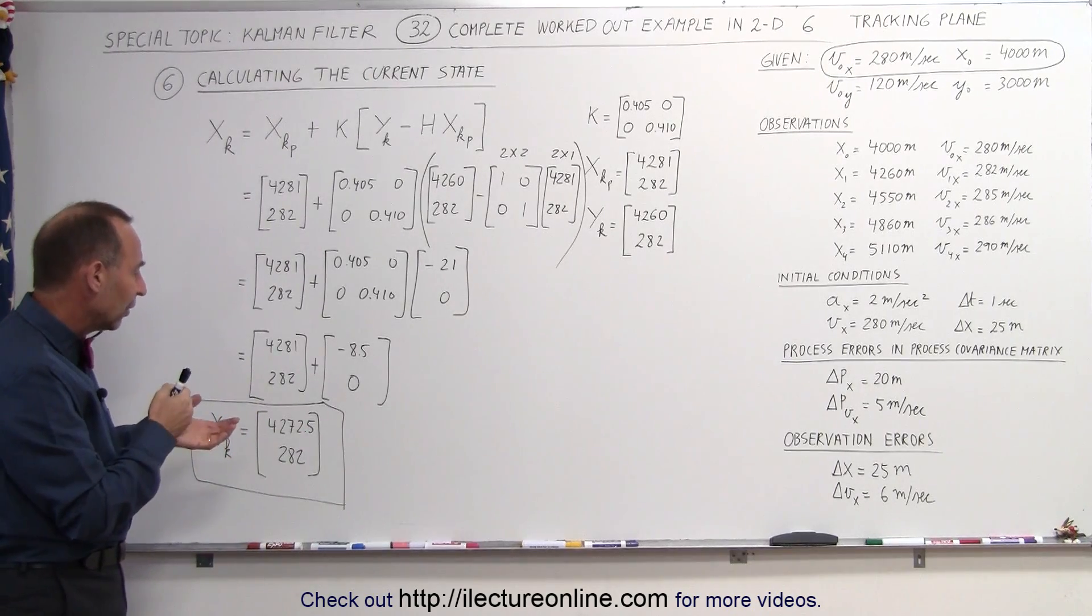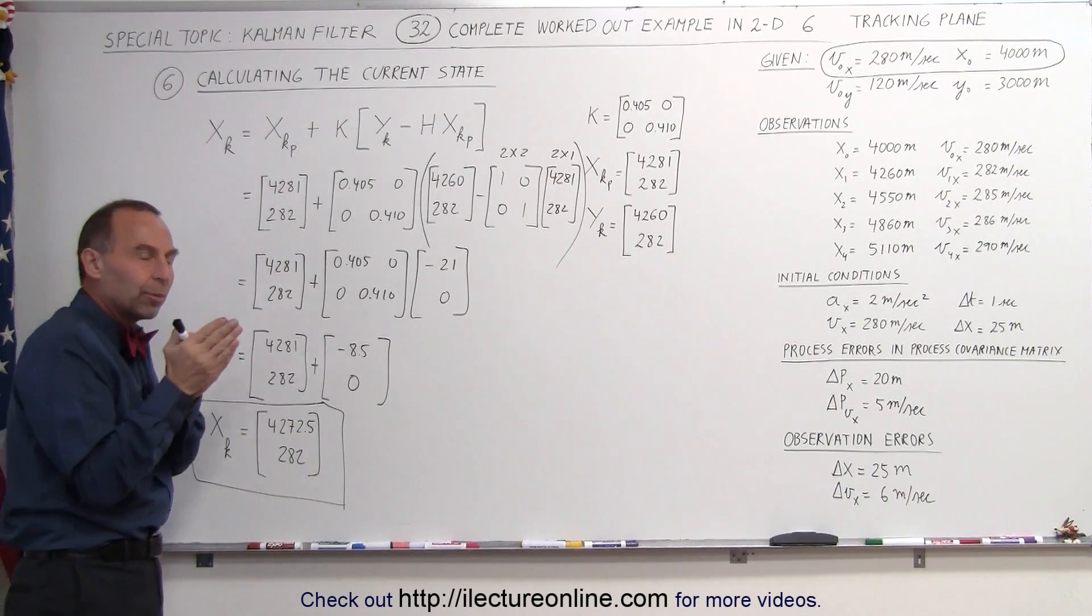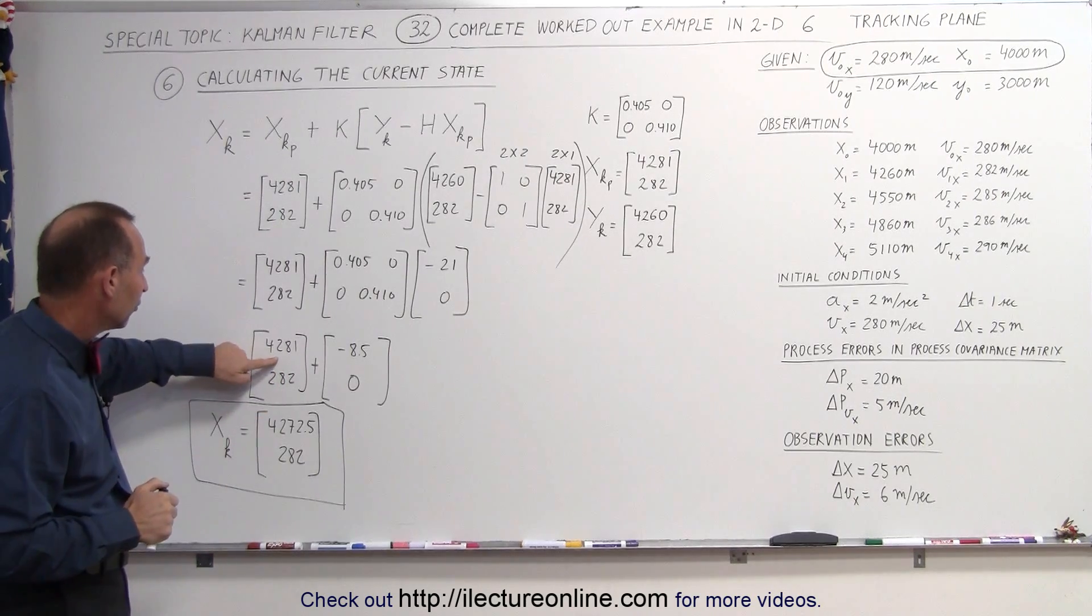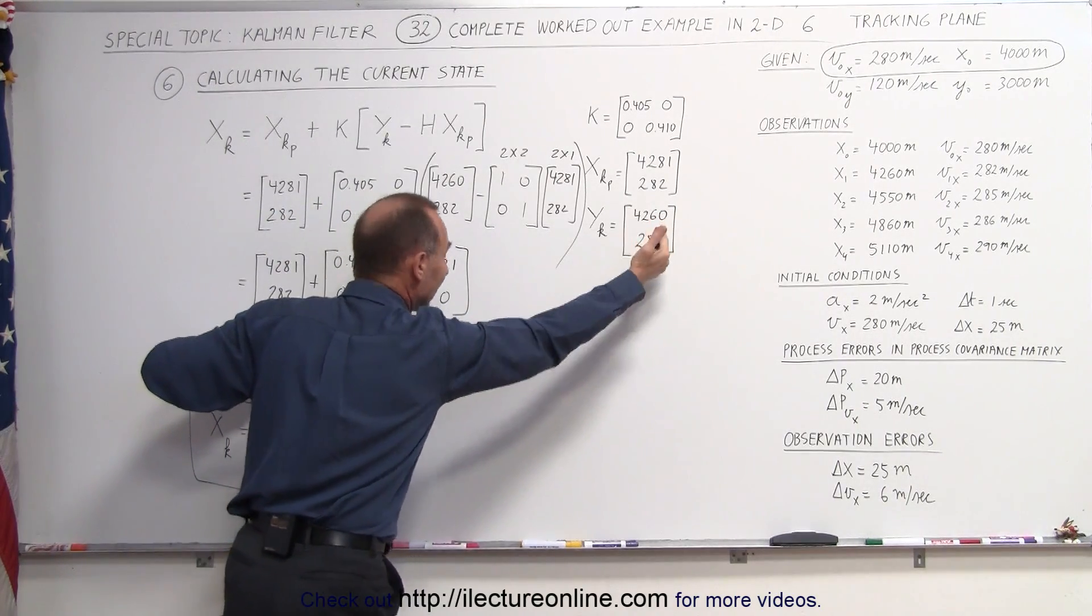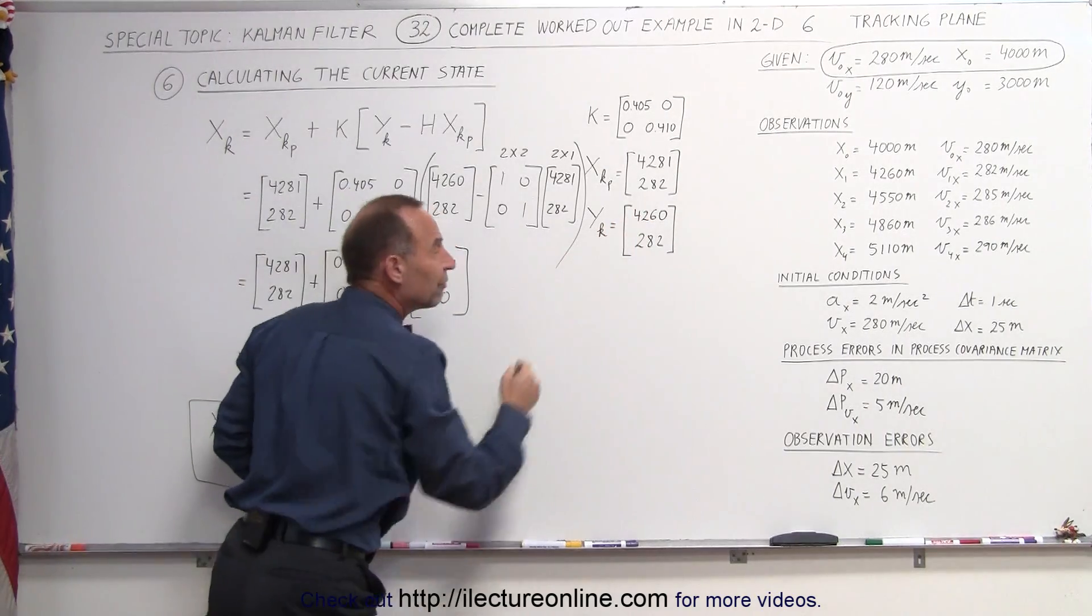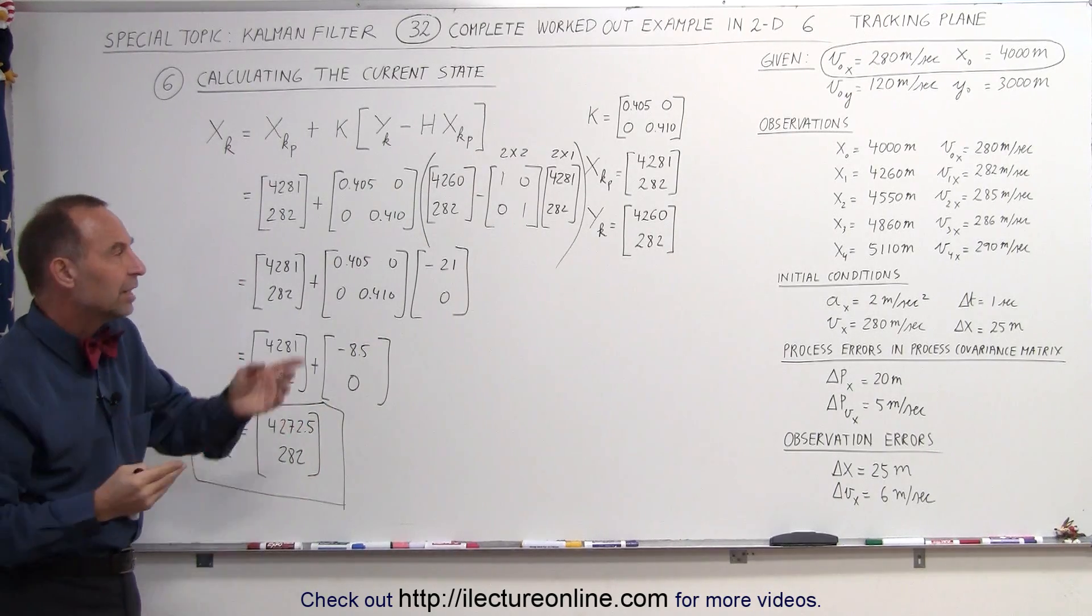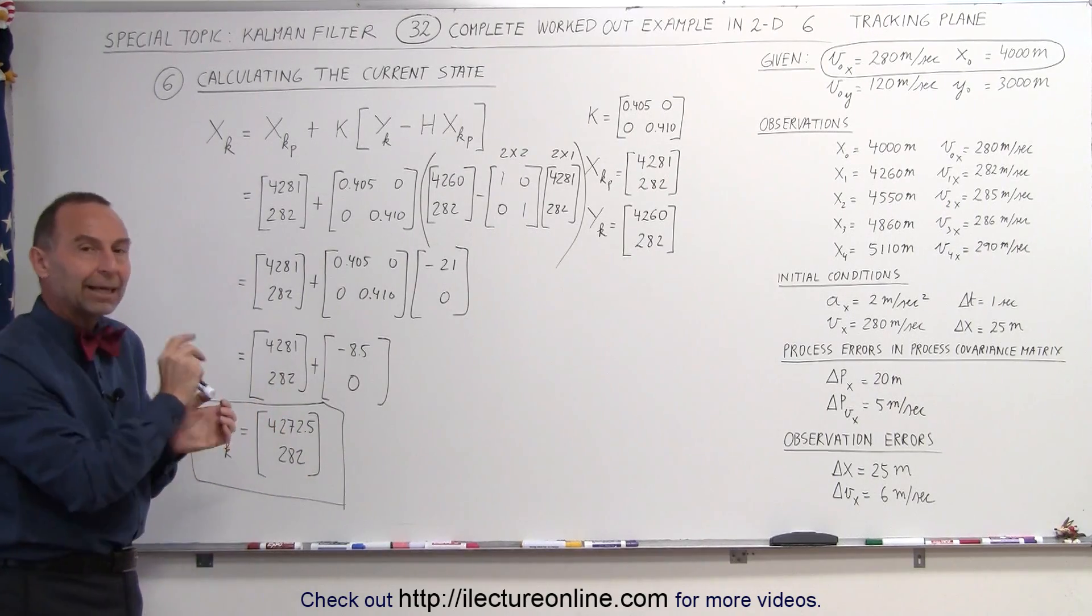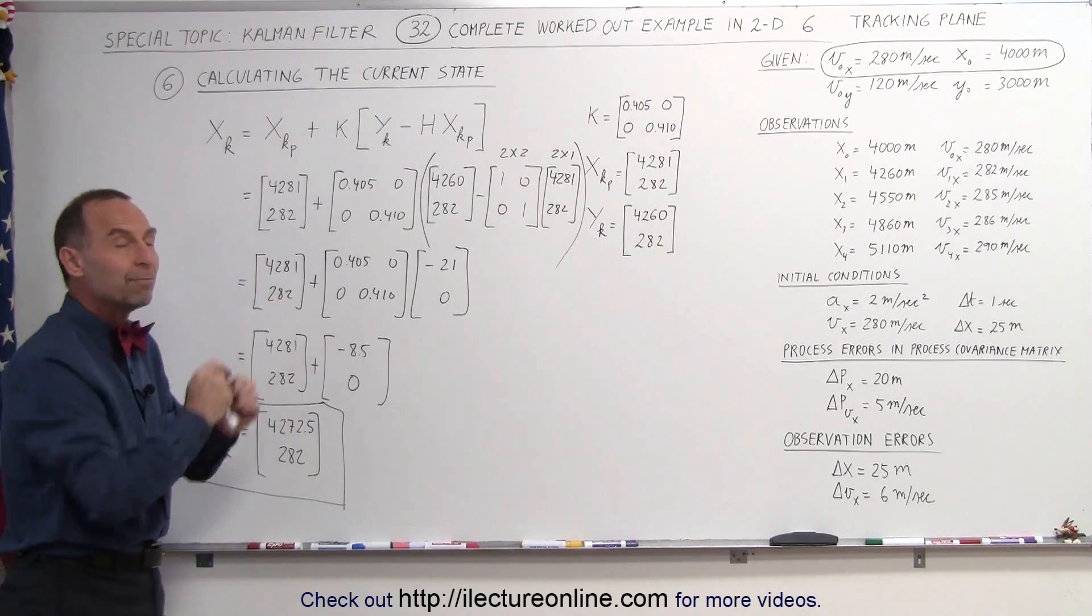It turns out that the predicted value was believed a little bit more than the measured value, so we wanted to lean a little bit more towards the predicted value rather than towards the measured value. Notice that if you take a look at the results, if the predicted value is 4,281 and the measured value is 4,260, the Kalman gain gave us a value in between but a little bit closer to the predicted value than to the measured value because according to the Kalman gain, we thought that there was too much of an uncertainty in the measured value.